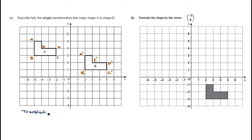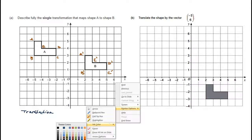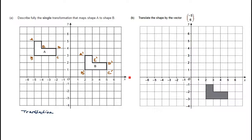It's a translation. The first mark is for identifying it as a translation. Now we need to specify the vector. If we draw a line going horizontally and then vertically from A to A prime here, that should give us the vector for the whole shape. So let's go ahead and do that.